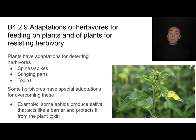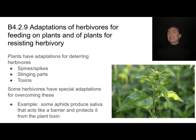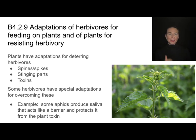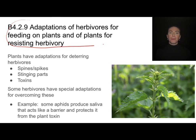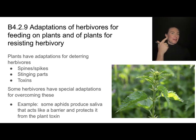For example, some species of aphids produce saliva that acts as a barrier so that when they stick their mouth part into the phloem, plant toxins don't come in contact with their actual mouth part and don't hurt them. It's a great example of this evolutionary back and forth — resisting herbivory, making herbivory successful, and so on.